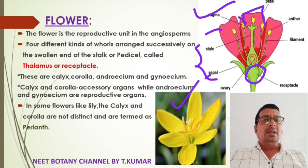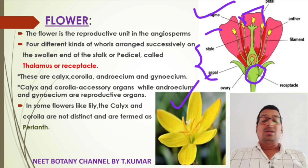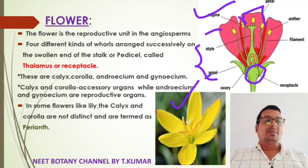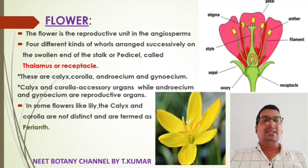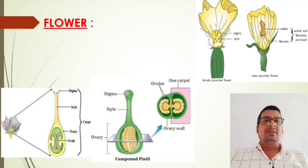In some plants like lily, the calyx and corolla are not distinct and are termed as perianth.